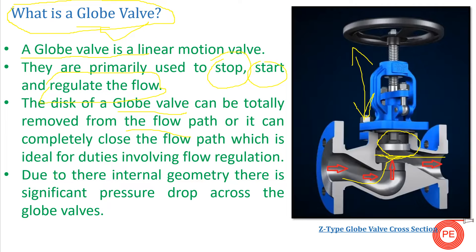However, there is one problem with globe valves. Due to their internal geometry, the direction of flow changes two to three times. Because of this, there is a huge amount of pressure drop across the valve. This is one of the main drawbacks of globe valves.